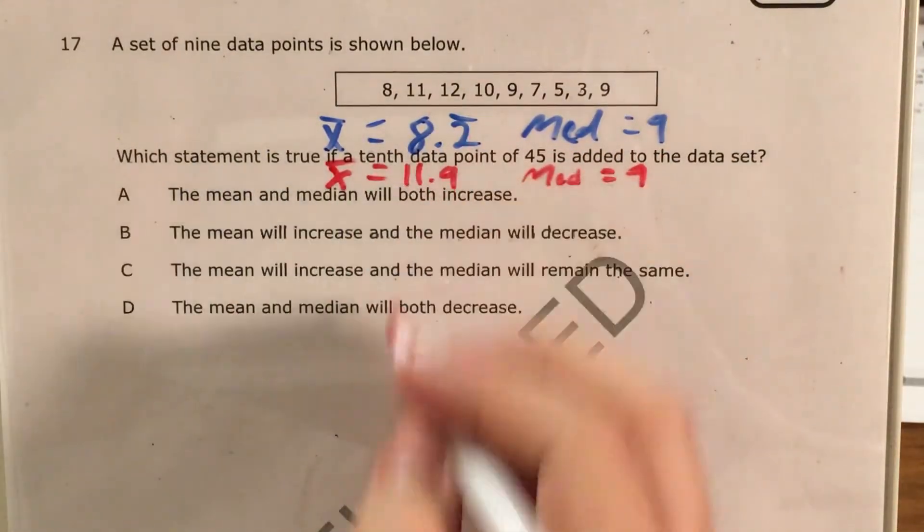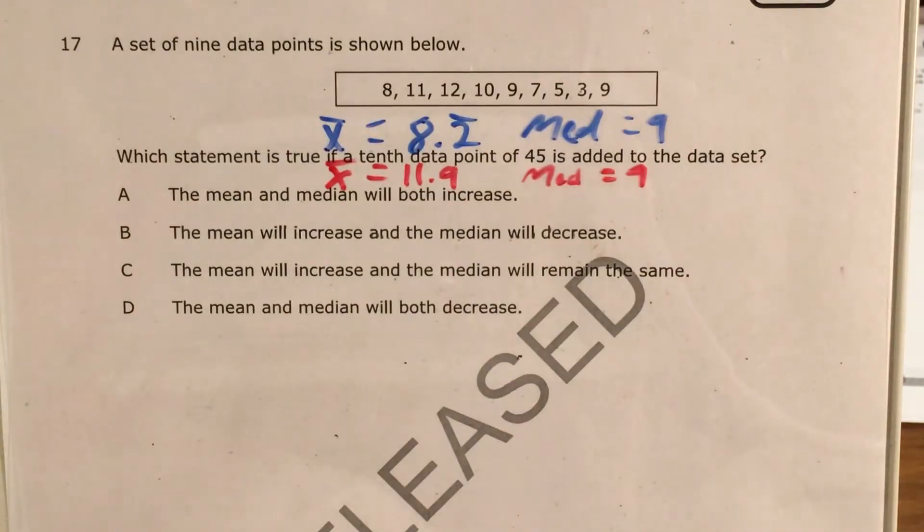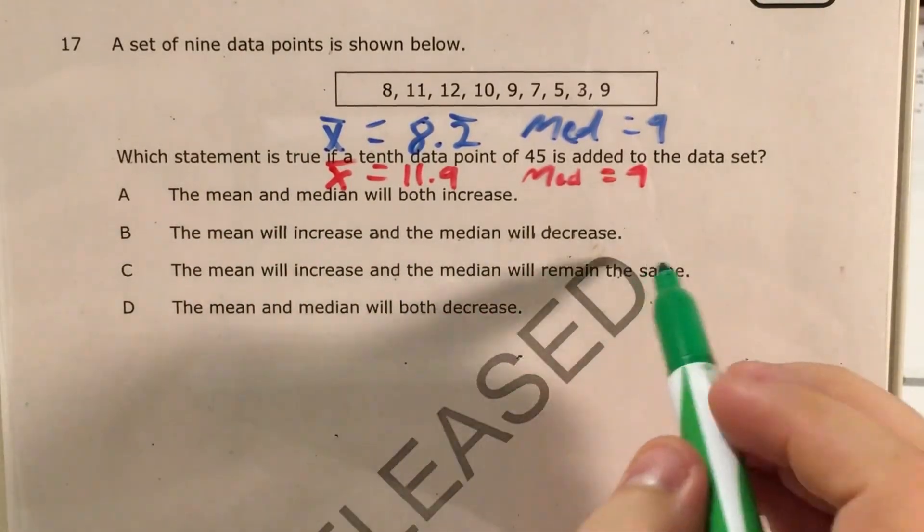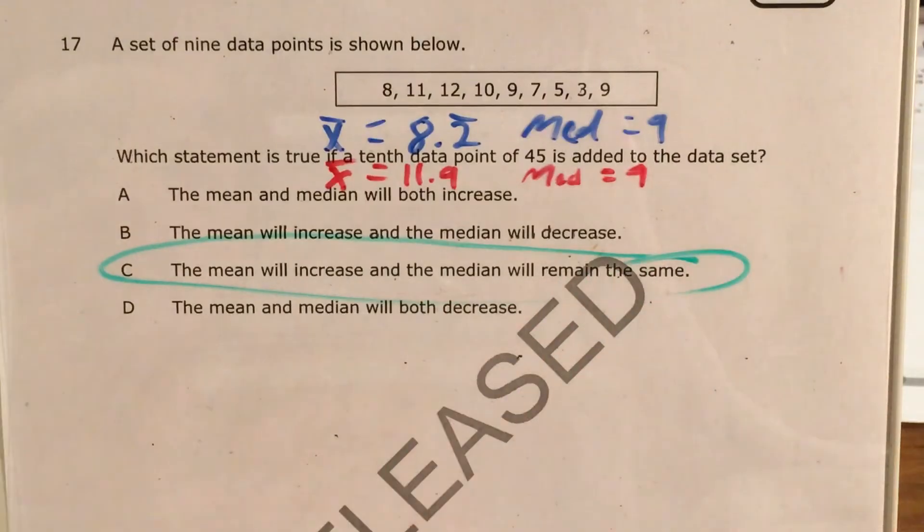So what happened? Our mean increased, our median stayed the same. And what answer choice matches what we just found in the problem? C. The mean will increase, and the median will remain the same. So C is our answer.